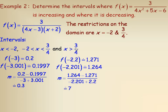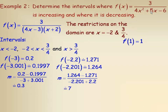Now for the interval greater than 3/4, I take x = 1. Plugging in: 1² × 4 = 4, 5 × 1 = 5, so 4 + 5 − 6 = 3, and 3 divided by 3 gives a function value of 1.